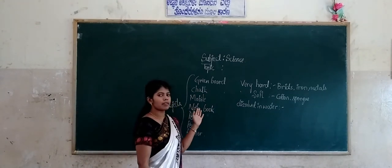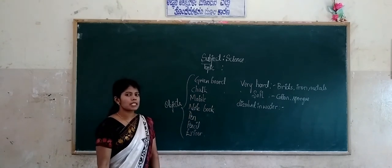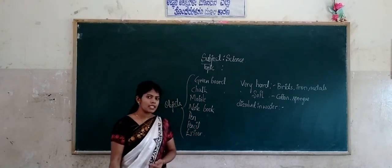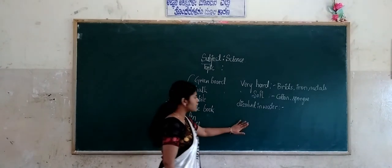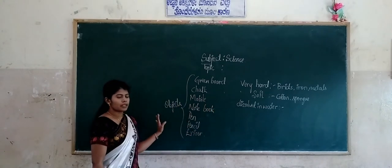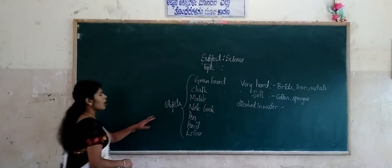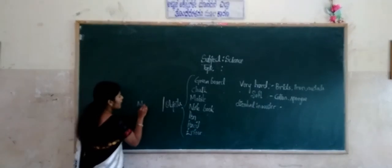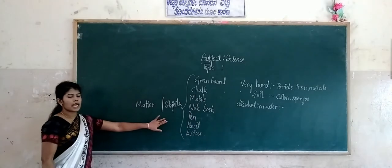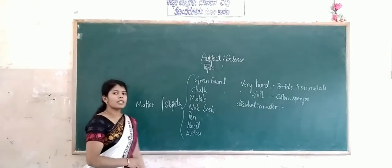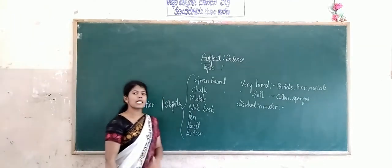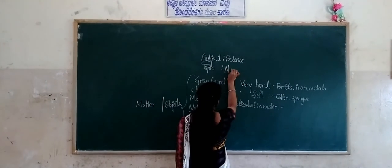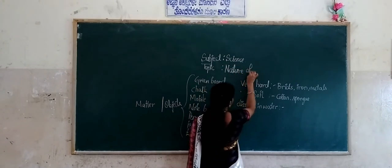Whatever the objects in our surrounding, we can easily observe them. Some examples are leaves and vegetables, which after decaying can convert into compost. These are all the objects we can see in our surrounding. Today in this class, we are going to learn about the topic: Nature of Matter.